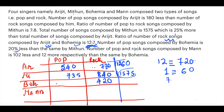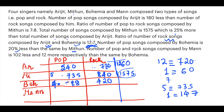The number of pop songs composed by Bohemia is 20% less than that by Mithun. If Mithun is 5, Bohemia is 4. Since 5 parts = 735, one part = 147, so Bohemia's pop songs = 4 × 147 = 588.